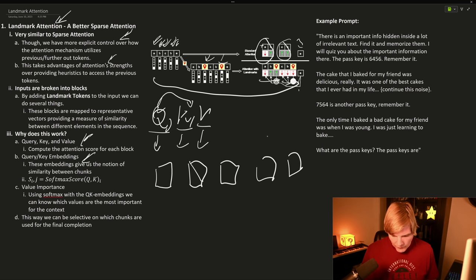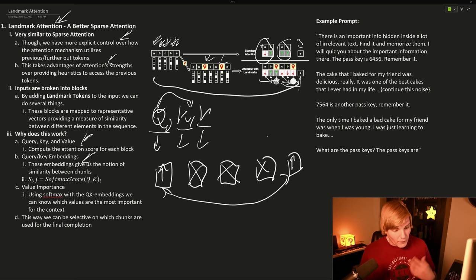So if these are not related, but these two are related, and our attention score is very high for both, then we can have the model automatically select these two chunks for using in our completion, but ignore these. And we'll go over an actual example of this over here in just a moment.